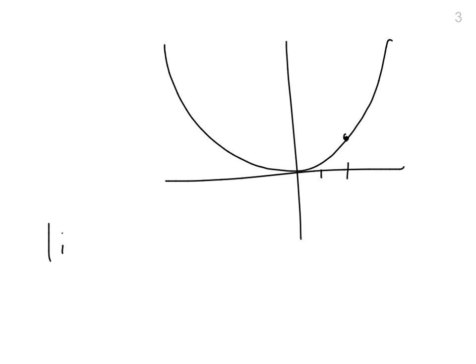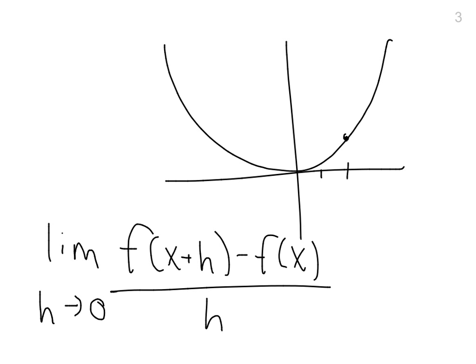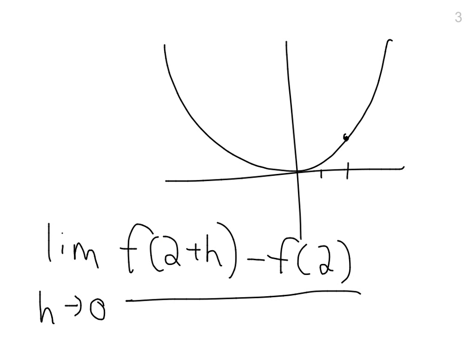So it's the limit as h, I'll explain what h is, goes to 0, of f of x plus h minus f of x all over h. Now let's pretend that f of x, in this case we'll do, you know what, we'll just do 2 because we're trying to solve it for 2. So let's back up, erase that. Limit as h goes to 0 of f of 2 plus h minus f of 2 all over h.